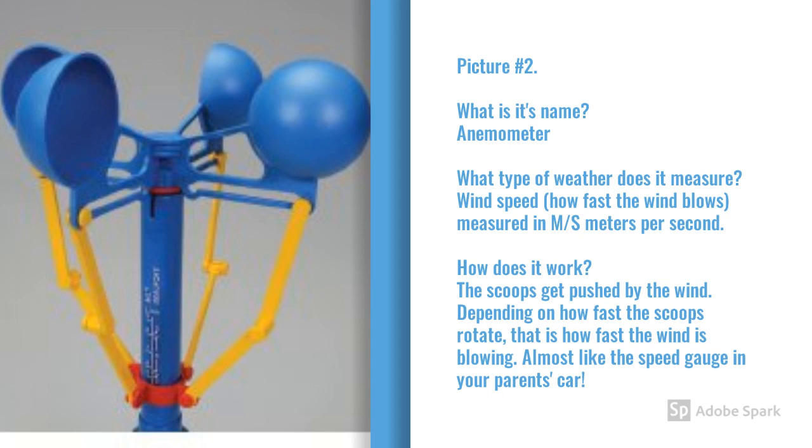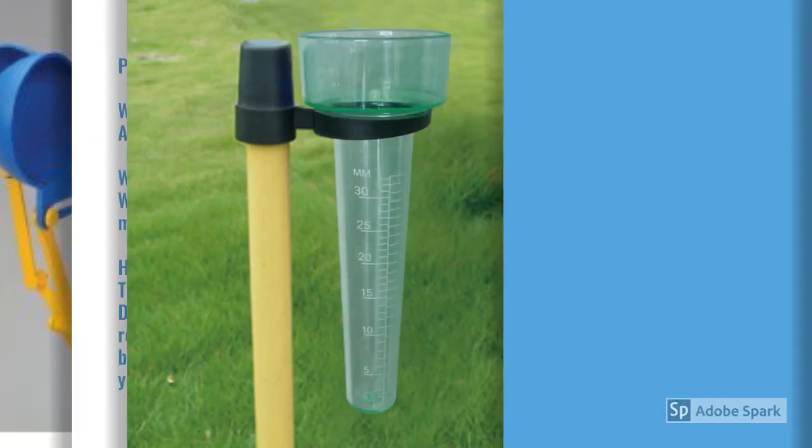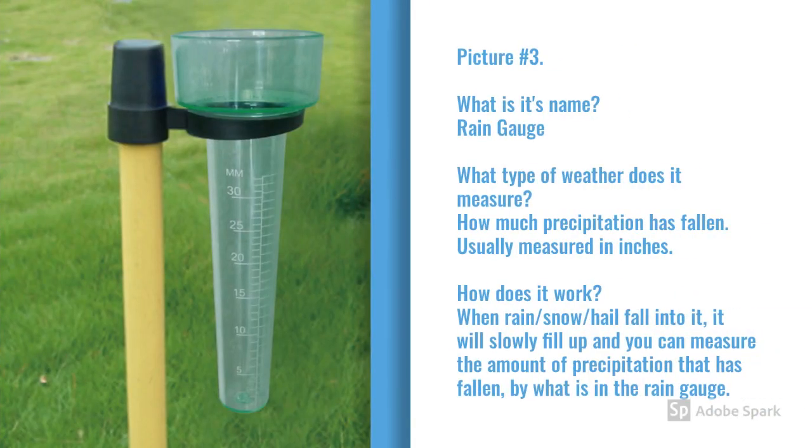Picture number two is called an anemometer. It measures the wind speed or how fast it blows, and it measures it in meters per second. The scoops get pushed by the wind. Depending on how fast it rotates, that determines how fast the wind is blowing.